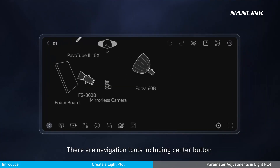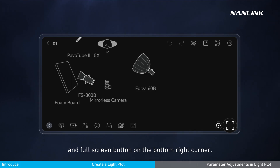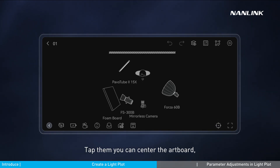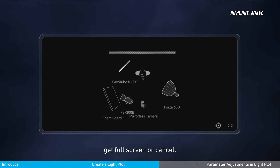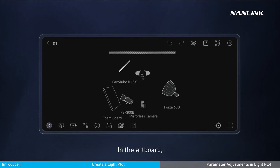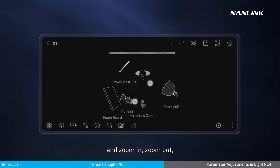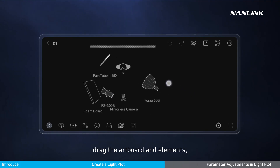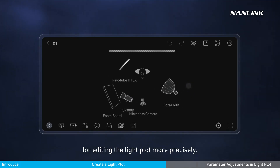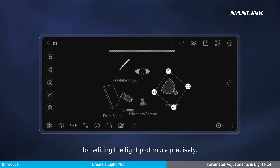There are navigation tools including a center button and full screen button in the bottom right corner. Tap them to center the artboard or enter and exit full screen. In the artboard, you can make a light plot with the elements and functions mentioned, and zoom in, zoom out, and drag the artboard and elements for more precise editing.